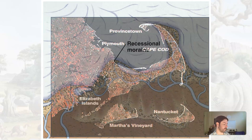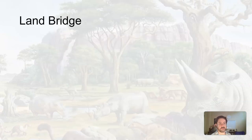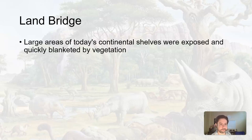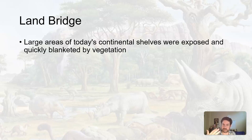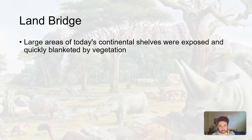Another cool byproduct of glaciation was something called the Bering Land Bridge. As glaciers and ice are created, the water that makes them up has to come from somewhere. So you're taking water out of the ocean, into the atmosphere, and then onto these glaciers — so sea levels are dropping.